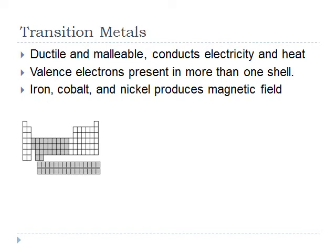Now let's talk about the transition metals, which you can see highlighted in the snapshot on screen — the darker middle portion and bottom portion of the periodic table. These are usually ductile and malleable, and they conduct electricity and heat. Their valence electrons are present in more than one shell, which is why they're called transition metals. Some transition metals such as iron, cobalt, and nickel also produce magnetic fields.